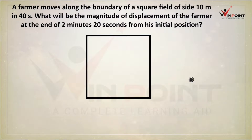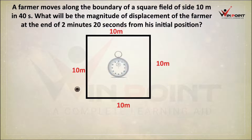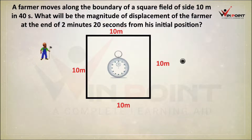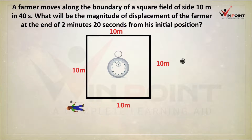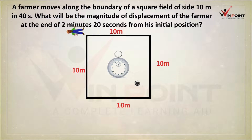There is a square field. The length of each side of the square field is 10 meters, and there is a farmer. This farmer is walking along the boundary of the square field. Within 40 seconds, he is completing one round — 10 meters, 20 meters, 30 meters, 40 meters. One round is completed.